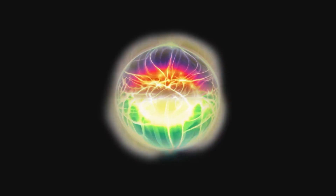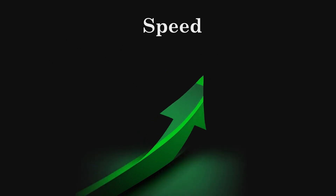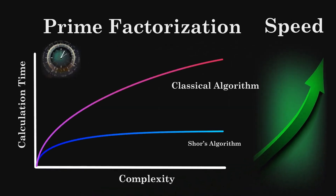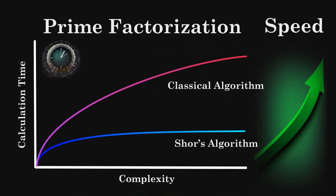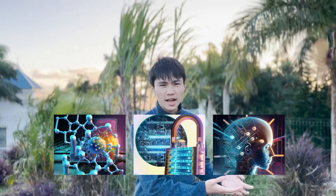So qubits use superposition and entanglement to gain exponential speed in calculations, allowing quantum computers to solve certain problems, like Shor's algorithm, far more efficiently. These advancements will soon transform various fields like medicine, encryption, and AI.